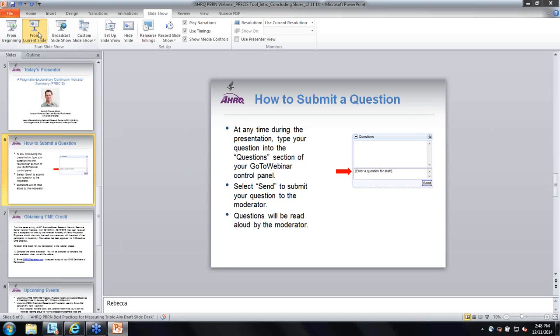Then we invite you to join us for two upcoming events. Our next PBRN Resource Center webinar will be on January 28th from 12.30 to 2 p.m. Eastern, and the title is Practical Insights on Meaning Objectives of Meaningful Use III. We also invite you to join the PBRN Pragmatic Research and Translation Learning Group call on January 5th from 1 to 2 p.m. Eastern time. For more information on upcoming events, you can visit our website, which is listed on this slide. And additionally, we're currently planning for and scheduling additional webinars on topics of interest. So if you'd like to present on one of these topics, or if you'd like to suggest additional webinar topics, please send your feedback to pbrn at abtassoc.com. Thank you.